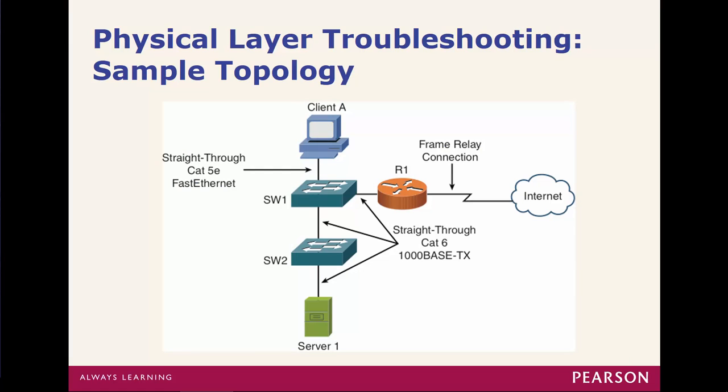Here's a great example: a straight-through cable — is that the appropriate cable type from a computer to a switch? What about between two switches? What about between a switch and a router? You want to make sure you understand what cables should go where. If it's like devices, you should be using a crossover: switch to switch, router to router, router to PC, PC to PC — all of those are crossovers.